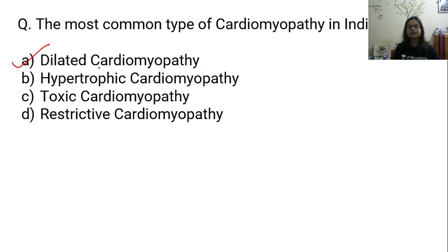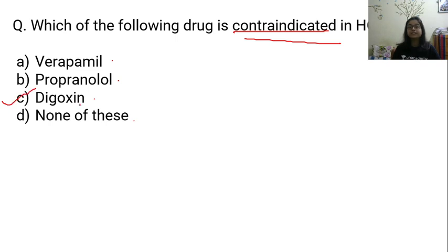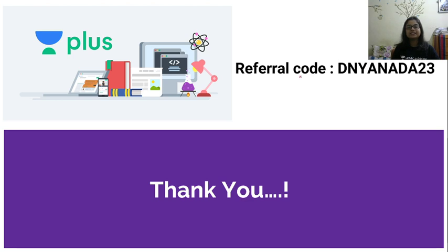Q4: Which drug is contraindicated in hypertrophic obstructive cardiomyopathy — verapamil, propranolol, digoxin, or none of these? The correct answer is digoxin, which leads to increased contractility of the heart. Whenever contractility increases, pre-aortic obstruction also increases in hypertrophic obstructive cardiomyopathy, so it must be contraindicated in this condition. I hope you enjoyed today's lecture and are clear with all the concepts related to cardiomyopathy, and will be able to solve related questions easily and correctly.